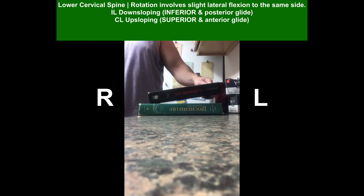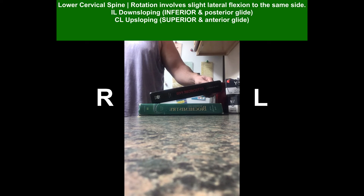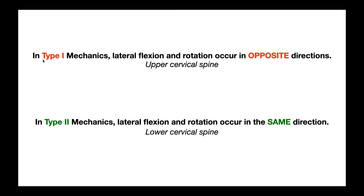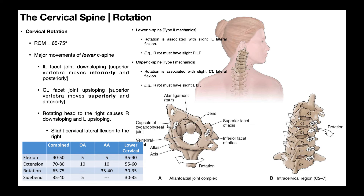This coupling is driven by those arthrokinematic movements and ultimately by the orientation of the facet joints. The upper C-spine follows type 1 mechanics — one is an odd number — so lateral flexion and rotation are at odds, going in opposite directions. In the upper C-spine, right rotation is accompanied by a little bit of left lateral flexion, or we can say rotation of the neck causes contralateral lateral flexion.